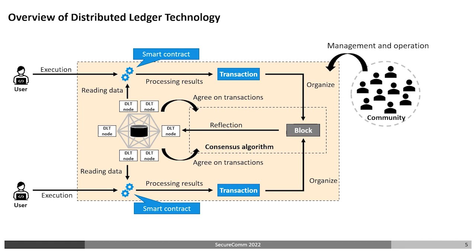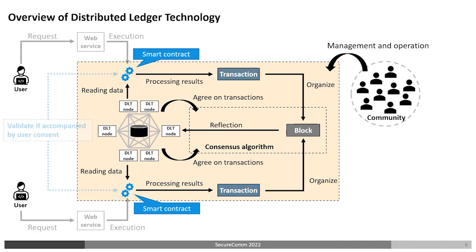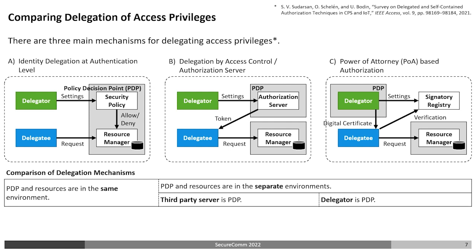Smart contracts are computer programs installed on all DLT nodes, and their processing is agreed upon by all nodes. This ensures that no arbitrary operations are allowed on the distributed ledger and that only transactions agreed upon by all nodes are executed. Our approach is to validate that this execution is accompanied by the user's consent in the part of the smart contract that accesses the distributed ledger. The user's consent can be paraphrased as a short-term delegation of access privileges.